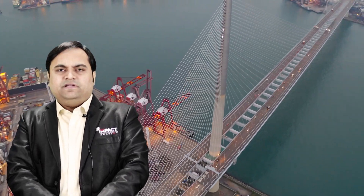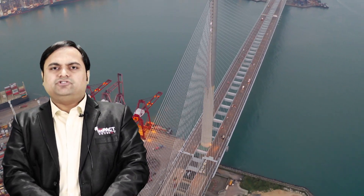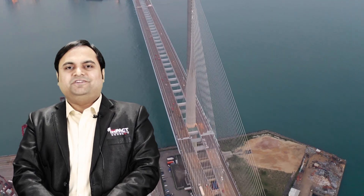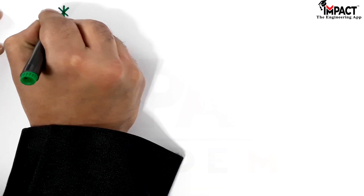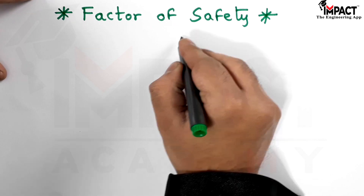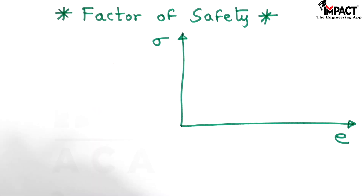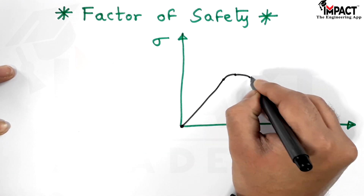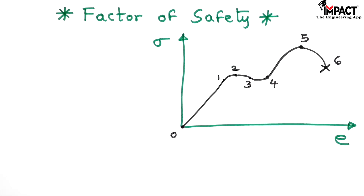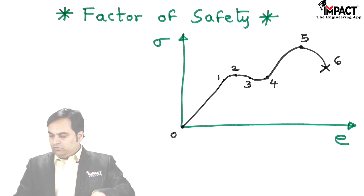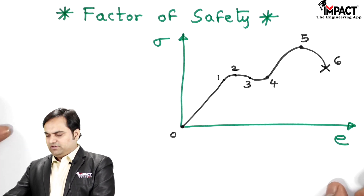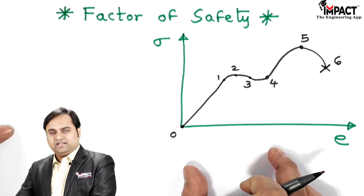In this video I will be explaining the definition of factor of safety. To explain the factor of safety, I have drawn a stress versus strain graph for a ductile material.